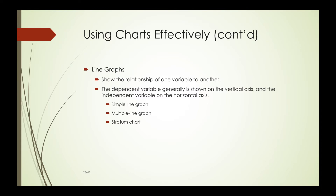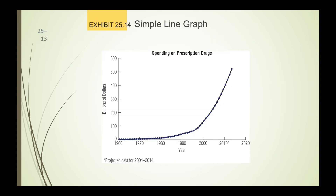Line graphs show the relationship of one variable to another. The dependent variable is generally shown on the vertical axis and the independent variable on the horizontal axis. You have a simple line graph, a multiple line graph, and a stratum chart. The simple line graph here shows a linear progression from 1960 — the billions of dollars spent increased throughout the decades. From the 1960s to the 1980s it was fairly stable, but from the 1980s up to almost 2015 it skyrocketed.